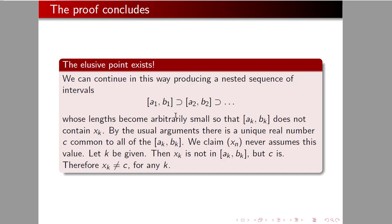So, decreasing sequence of nested intervals, by the usual arguments, there is a unique real number c that's common to all of these intervals. We claim that the sequence x n never assumes this value. Well, pick a k, then xk is not in ak, bk, but c is. Therefore, x cannot be equal to c for any k at all. Thank you very much for your time.